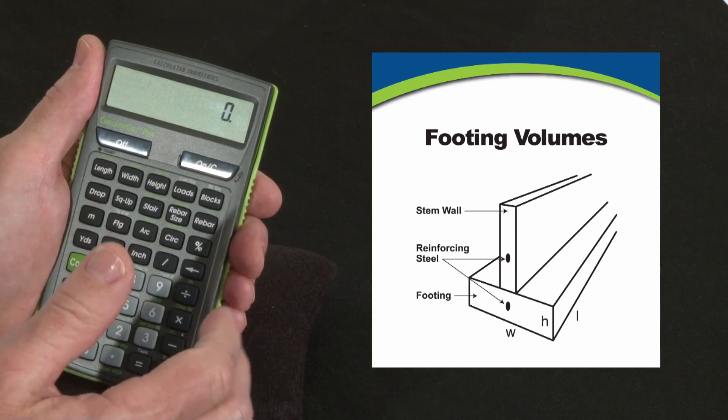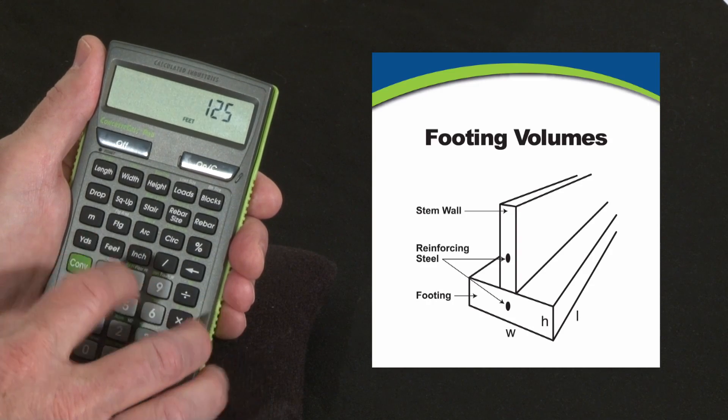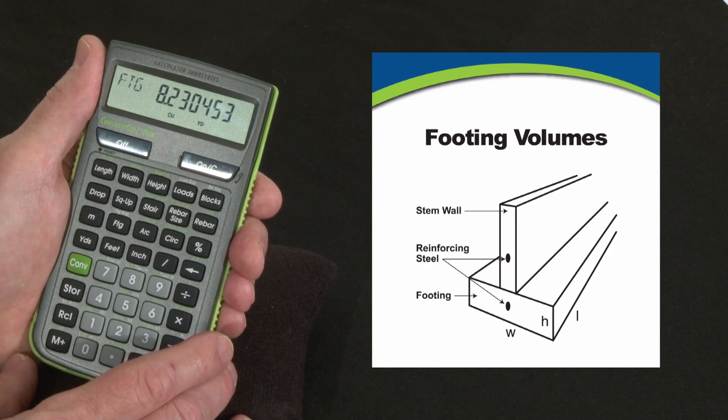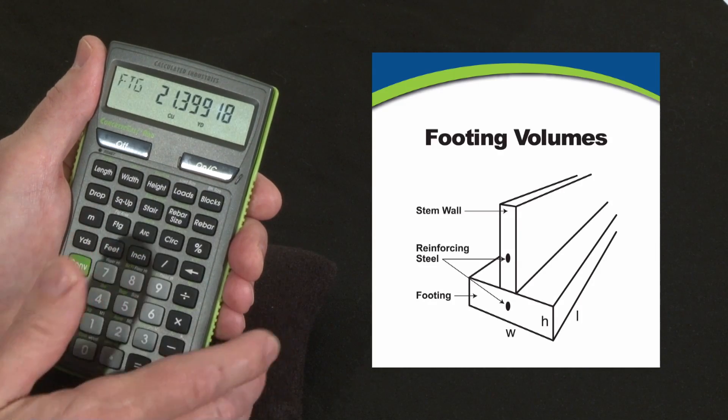Now whenever I need to calculate footings, all I have to do is put in the lineal value. So if someone says I need 125 feet of footing, there it is: 8.2 cubic yards. If someone says I need 325 feet of footing, there it is: 21.39 cubic yards.